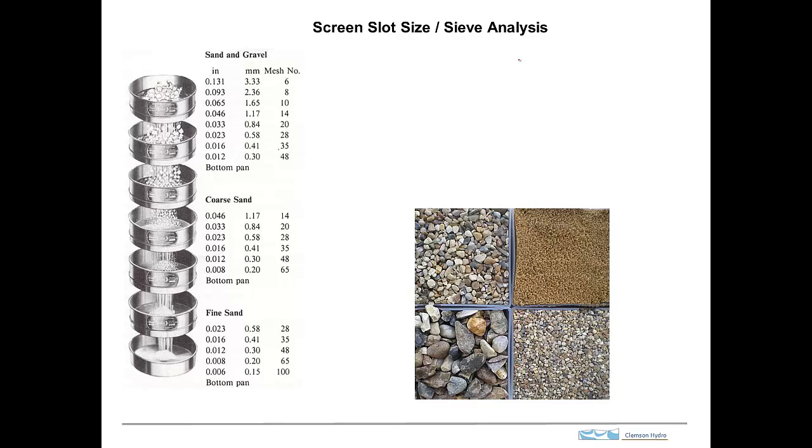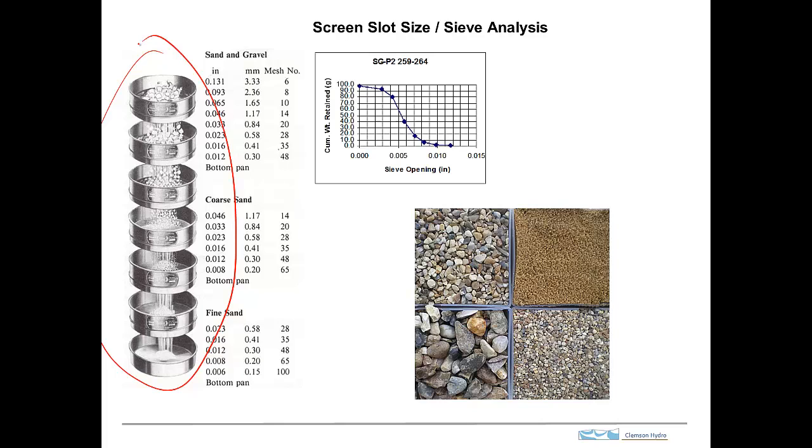So we've got the screen that's holding back the filter pack. And the filter pack holds back the formation. Well, in order to size the filter pack under ideal conditions, what you would do is take samples of the formation, put it through a sieve, and come up with a grain size distribution of the material in the formation. And then based on that, you would size the filter pack. The filter pack has to be finer than the formation and coarser than the screen.